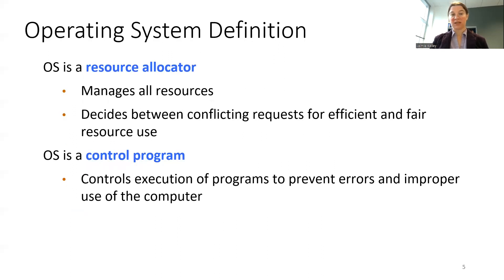There are other ways we can think about an operating system. We can think about it as a resource allocator, which manages all of the resources on the computer and decides between conflicting requests for those resources so that things are efficient and fairly distributed. You can also think of the operating system as a control program, which controls the execution of programs to prevent errors and improper use of the computer.